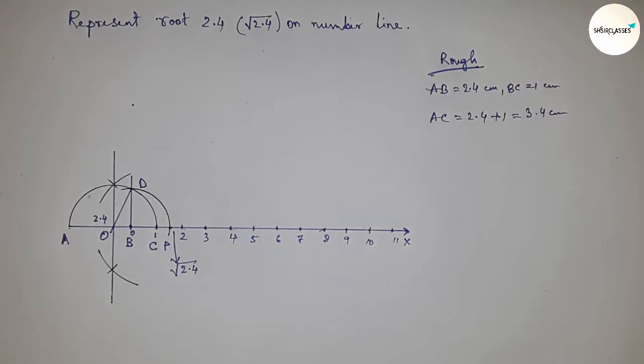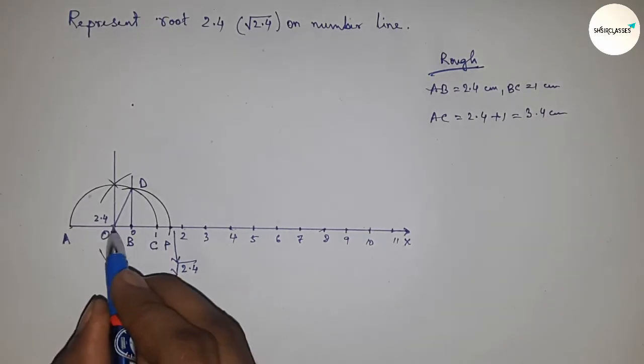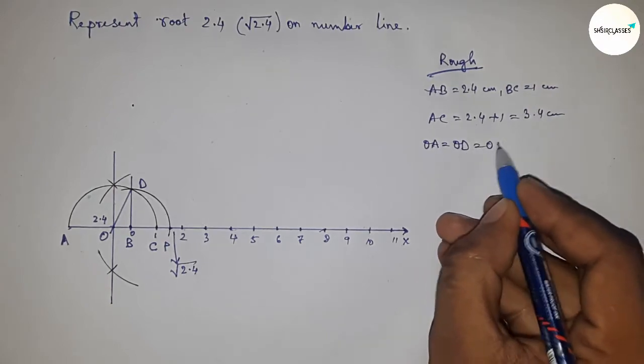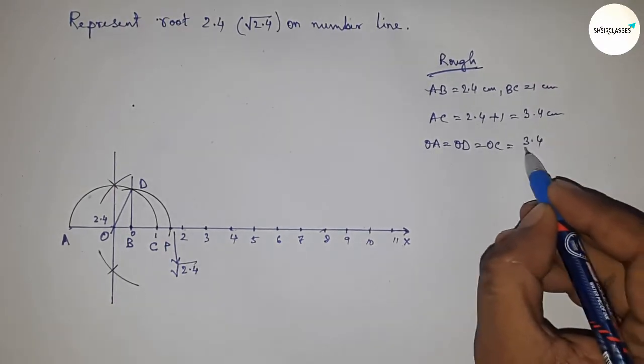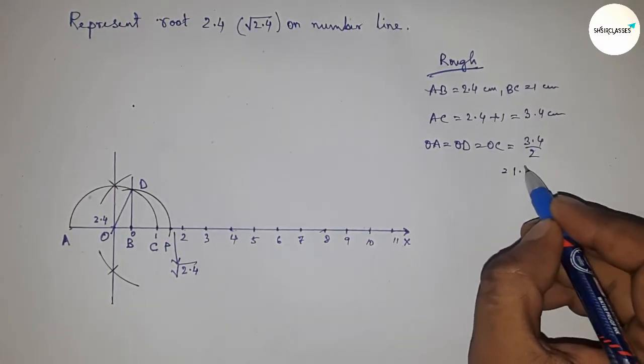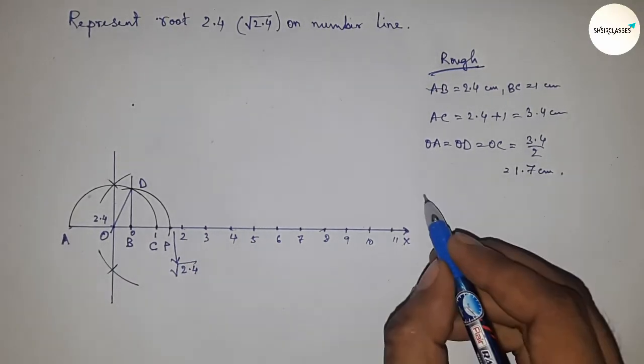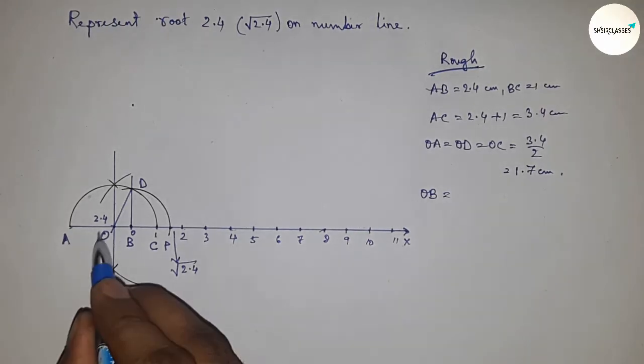The radius OA, OC, and OD all equal 3.4 divided by 2, which is 1.7 centimeters.